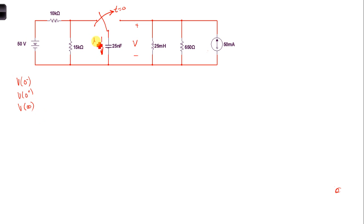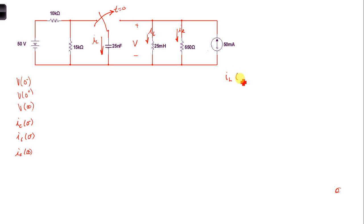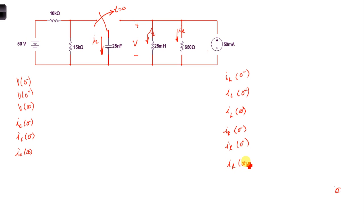Let's also define the current through the capacitor, the current through the inductor I sub L, and the current through the resistor I sub R, all referenced down from the upper node. We'll be interested in I sub C, I sub L, and I sub R each at zero minus, zero plus, and infinity.